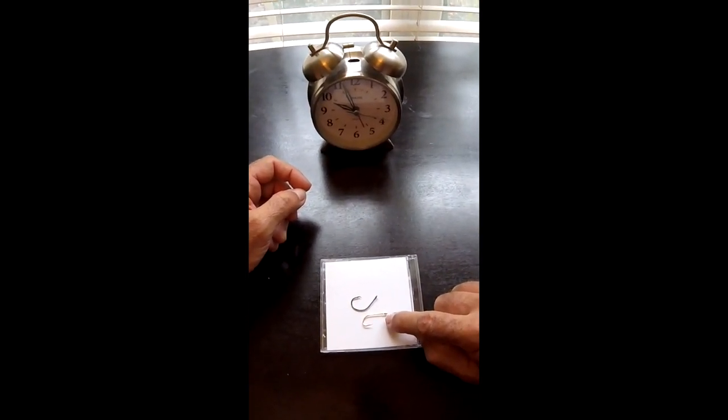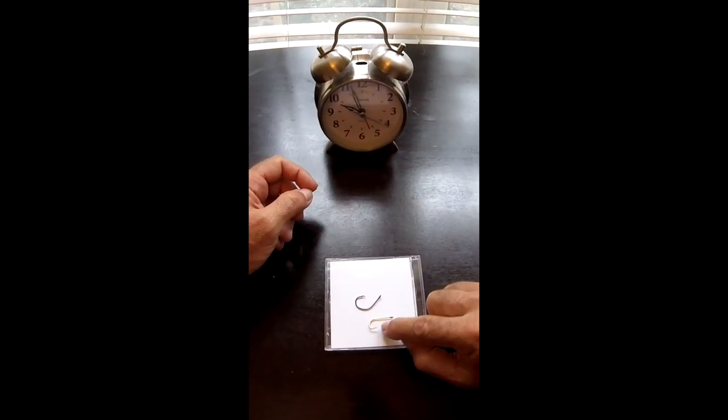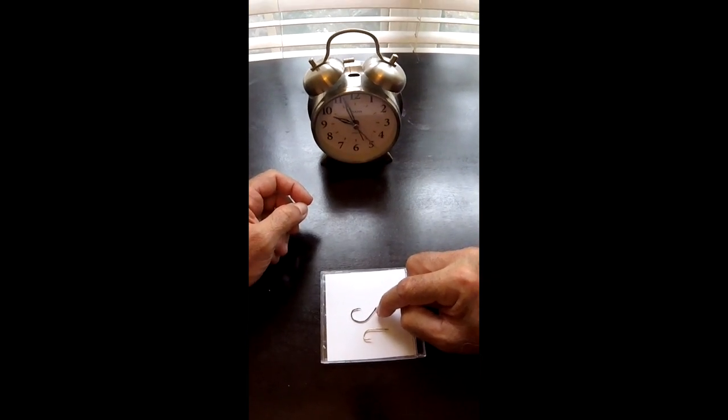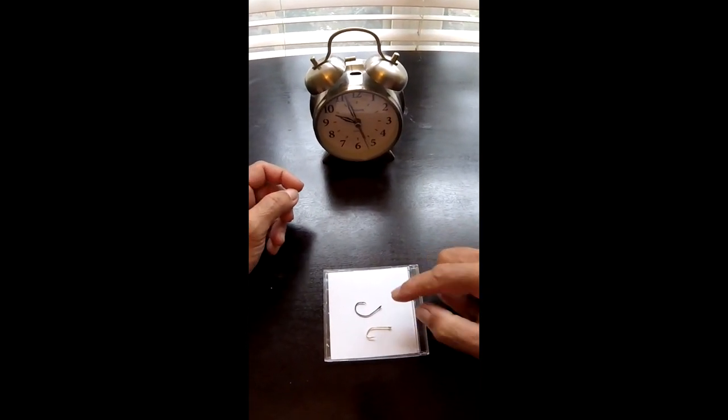I like to use a number four hook. This is a number four hook right here, and I'll go no bigger than a one-aught hook right here. This is a one-aught circle hook.